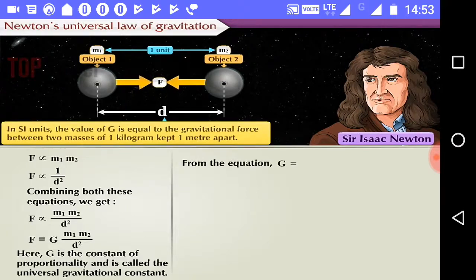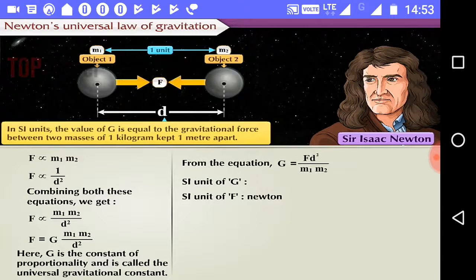G is equal to F into D square upon M1 into M2. From this equation, let us know the SI unit of universal gravitational constant. For which, let us first write the units of force F, distance D, and mass M.